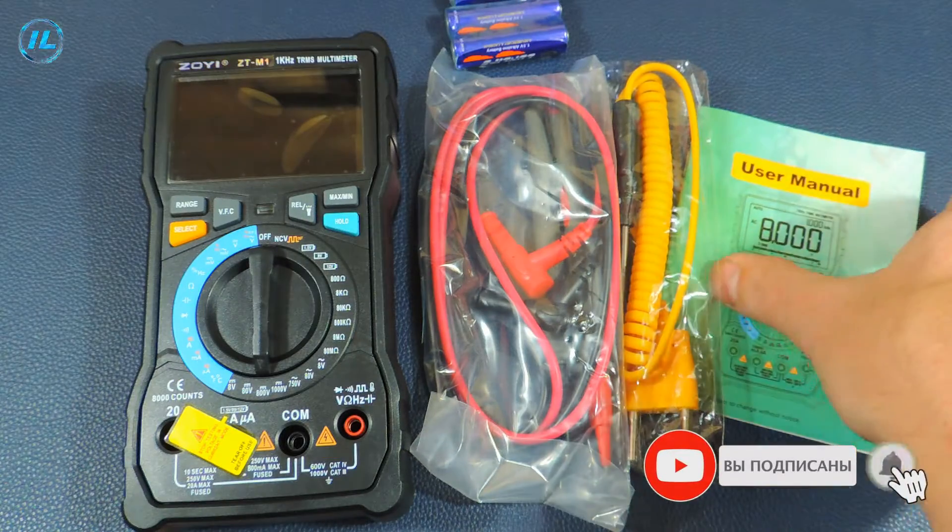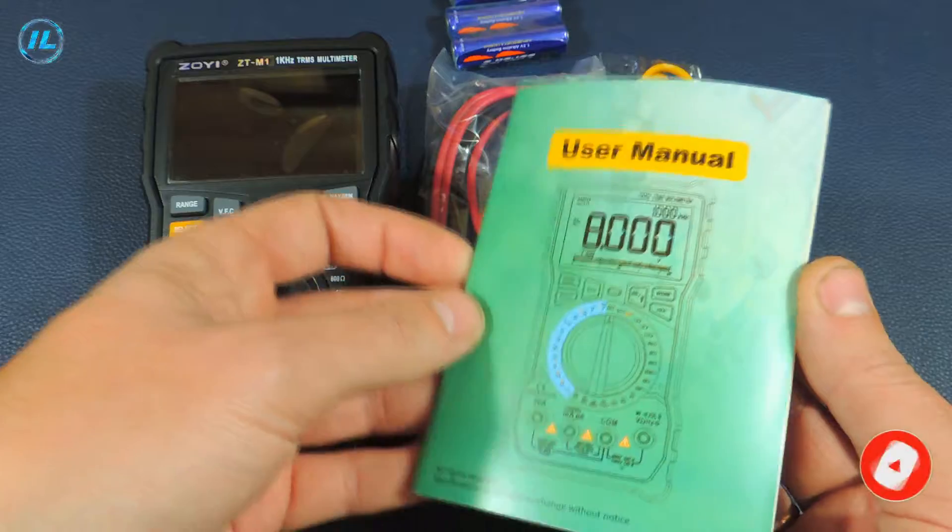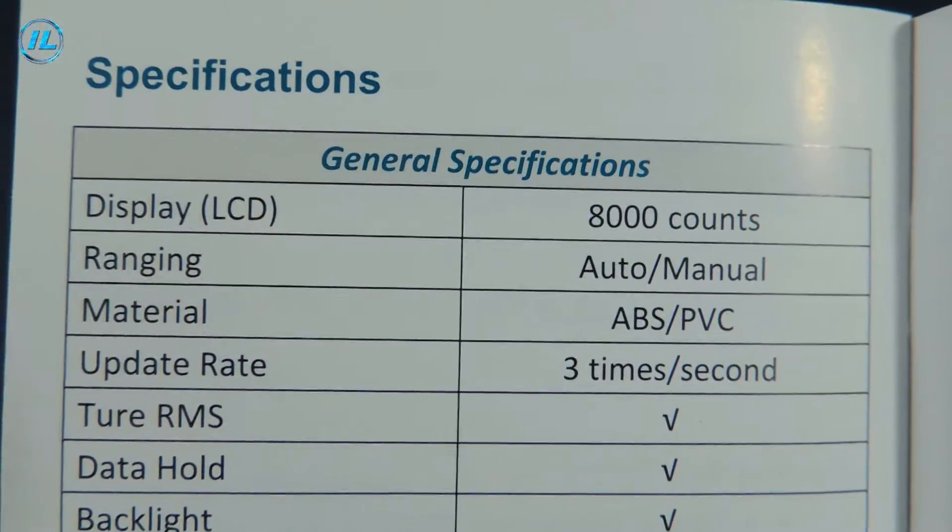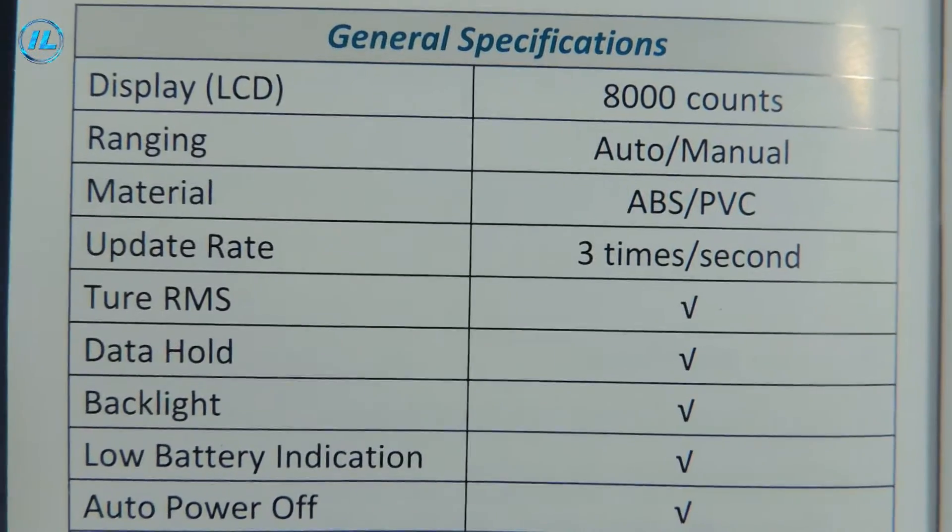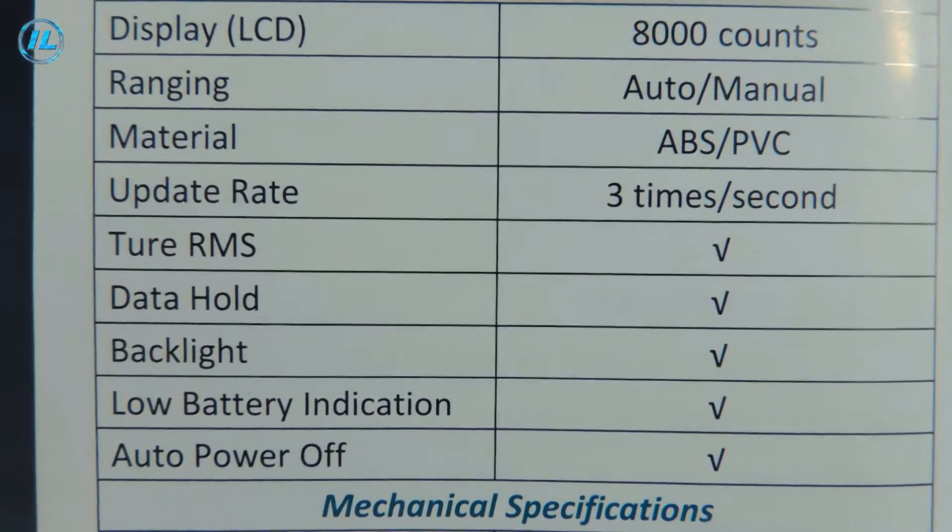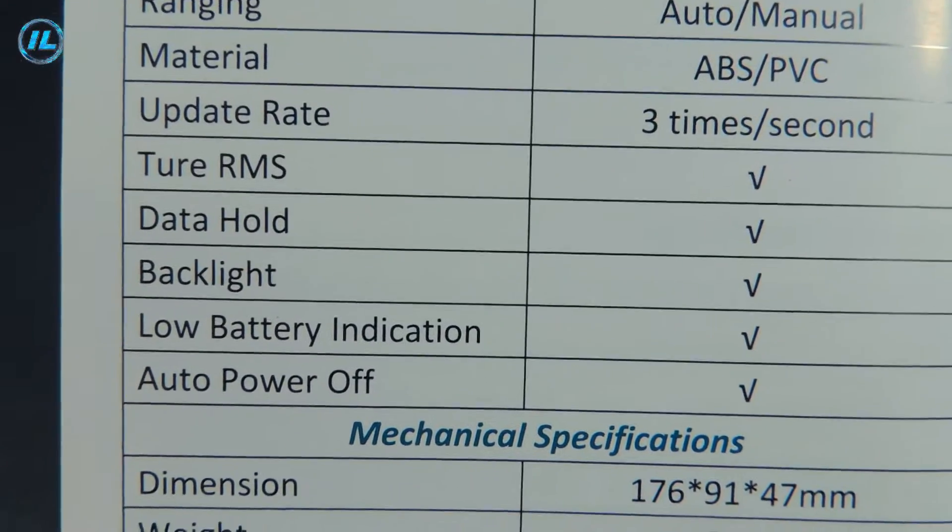First, as usual, let's look at the characteristics of this multimeter specified in the instructions. The screen resolution is 8000 counts. The indicators are updated on the screen three times per second. There are true RMS functions and also fixation of measurement results on the screen.